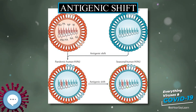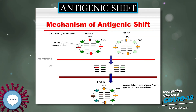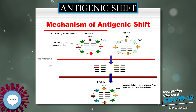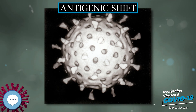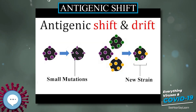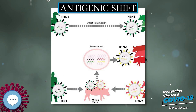The most recent 2009 H1N1 outbreak was a result of antigenic shift and reassortment between human, avian, and swine viruses. One increasingly worrying situation is the possible antigenic shift between avian influenza and human influenza, which could cause the formation of highly virulent viruses.